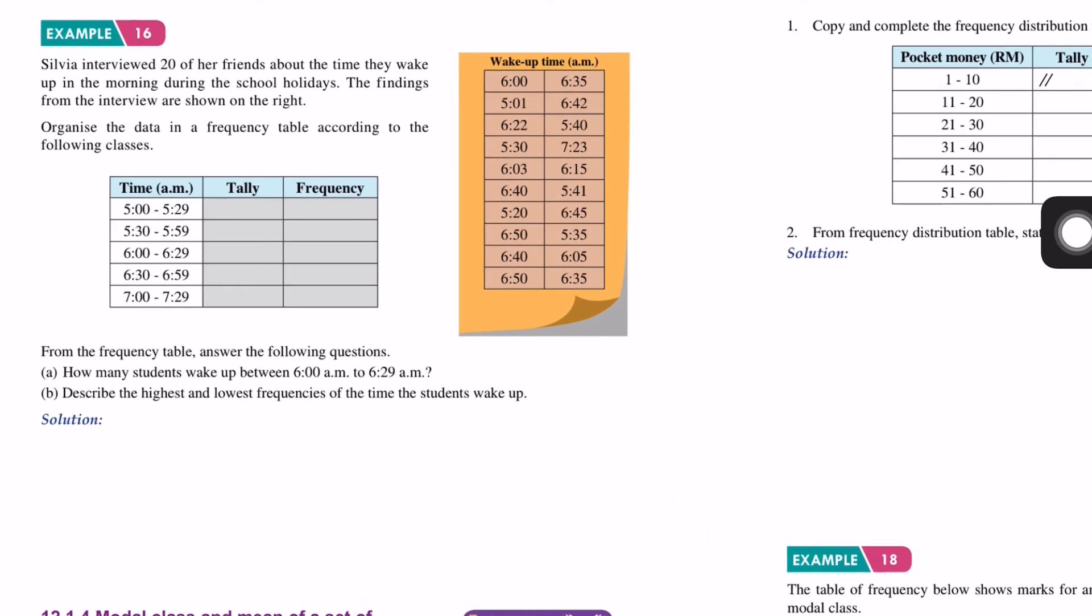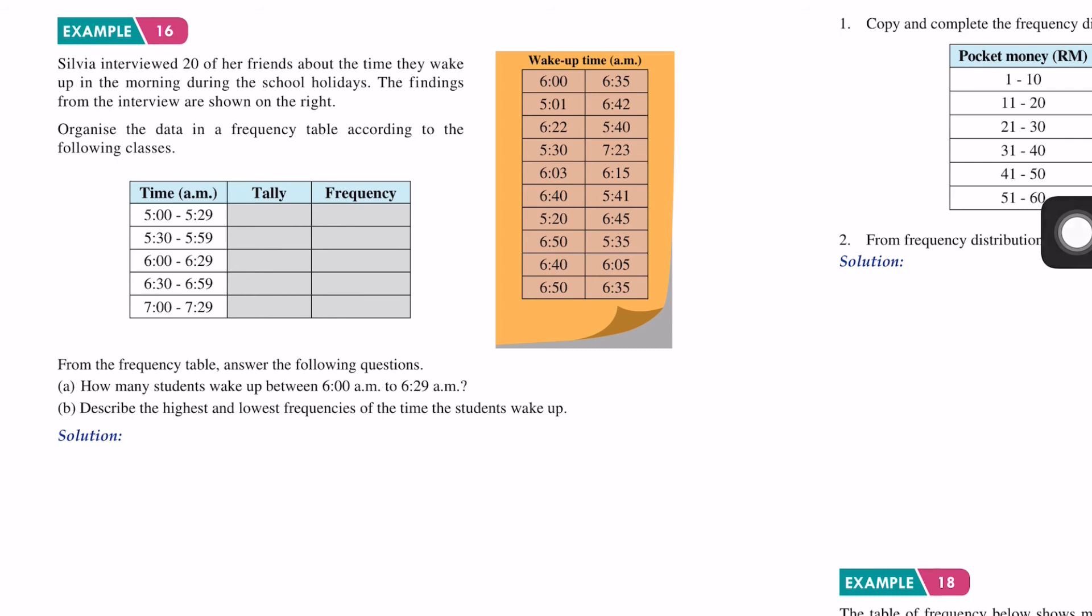Let's fill in the frequency table. For 5:00 to 5:29, we have 2: tally 1, 2. For 5:30 to 5:59, we have 4: tally 1, 2, 3, 4. Next we have 5: tally 1, 2, 3, 4, 5. Next we have 8: tally 1, 2, 3, 4, 5, 6, 7, 8. And the last one, we have only 1.